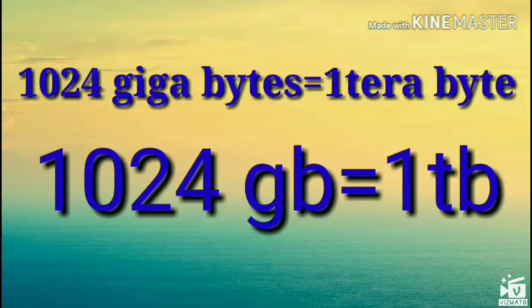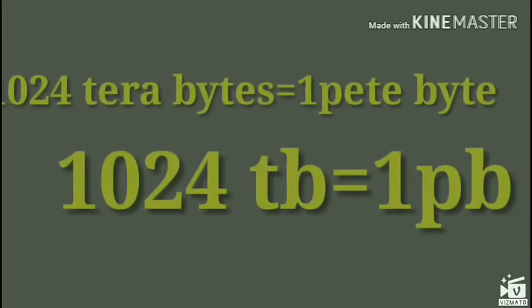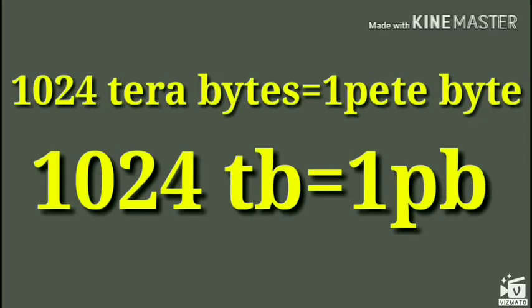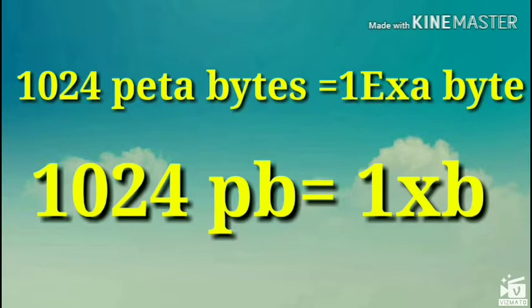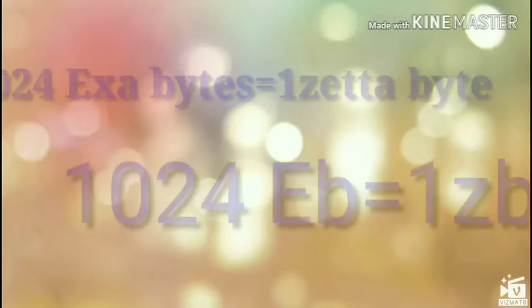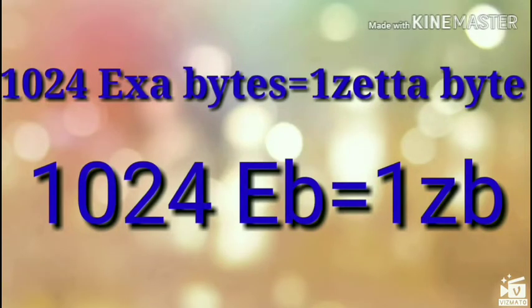1024 gigabytes equal to 1 terabyte. 1024 terabytes equal to 1 petabyte. 1024 petabytes equal to 1 exabyte. 1024 exabytes equal to 1 zettabyte.